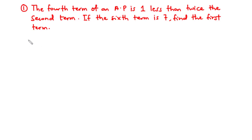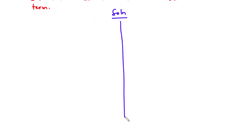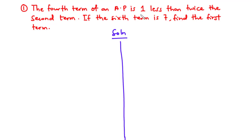Our first question is NOVDEC 2012 question 15b. The fourth term of an AP is 1 less than twice the second term. If the sixth term is 7, find the first term.